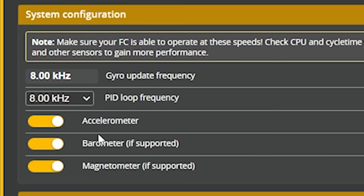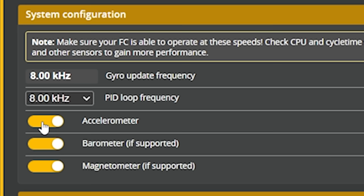Continuing on down, we have three options to enable or disable the accelerometer, barometer, and magnetometer. Not all flight controllers will have all of these sensors. All flight controllers will have an accelerometer because it's built into the same chip as the gyro and the quadcopter can't fly without the gyro. If you disable the accelerometer, things like angle mode, horizon mode, and any other feature that relies on it to determine which direction is up will stop working.